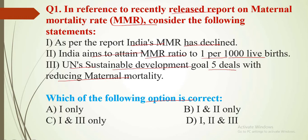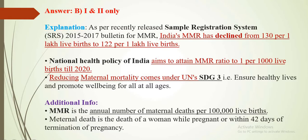Statement 3 is incorrect; statements 1 and 2 are correct. So the answer is B — first and second only. India's MMR has declined from 130 per 1 lakh live births to 122 per 1 lakh live births. Maternal mortality rate reduction comes under UN's SDG Goal 3, not Goal 5. SDG Goal 5 is actually for gender equality.